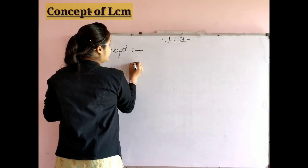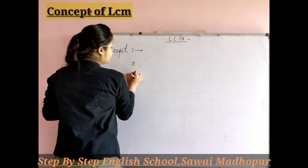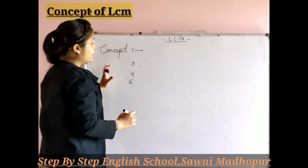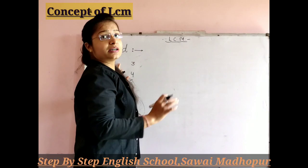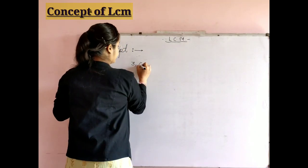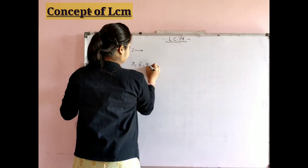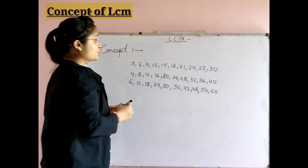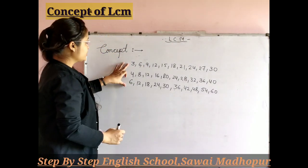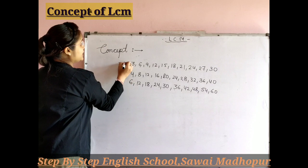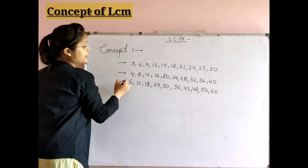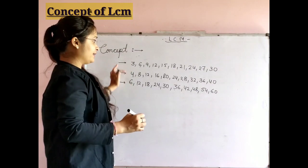So let's take the example of 3, 4, and 6. Please write the multiplication table for 3, 4, and 6. Find out the two or more multiples for each of these numbers — 3, 4, and 6. So we have written the tables for each.